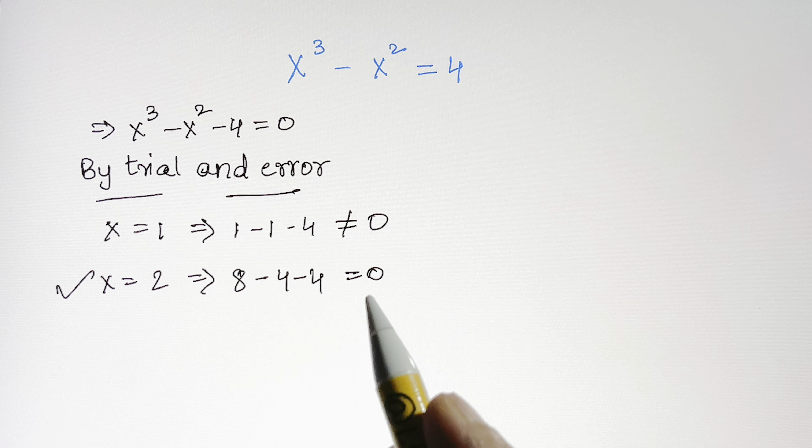Now that we've found one factor — x equals 2 — when you bring 2 to the other side it becomes (x minus 2). There's something else multiplied here that we have to find out. To do that, we divide using the long division method: x³ minus x² minus 4 divided by (x minus 2).